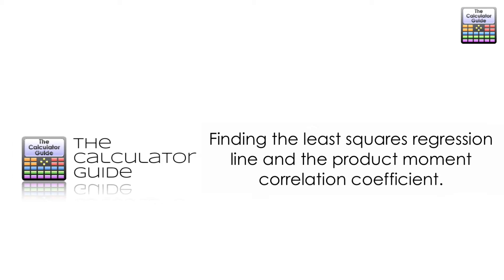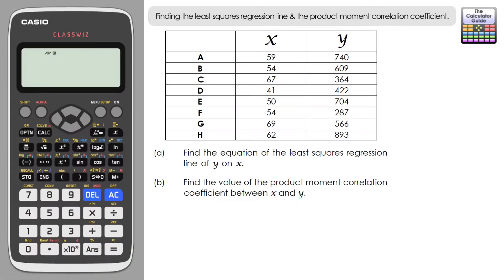Hello and welcome to the calculator guide video on finding the least squares regression line and the product moment correlation coefficient. This will be using the Casio ClassWiz.